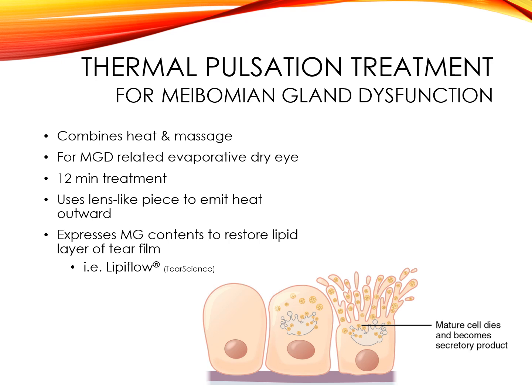Thermal pulsation treatment is specifically aimed at addressing meibomian gland disease-related evaporative dry eye. It combines heat and physical massage to liquefy and express the meibomian gland contents to normalize the lipid layer of the ocular surface. The device consists of a small piece resembling a scleral contact lens, which slides beneath the lids and over the globe. It emits heat outward to the lids while protecting the eye from heat. The second part of the device sits outside the eye on the lids and provides pulsatile squeezing to open gland orifices and express the warmed oil. The treatment takes 12 minutes.